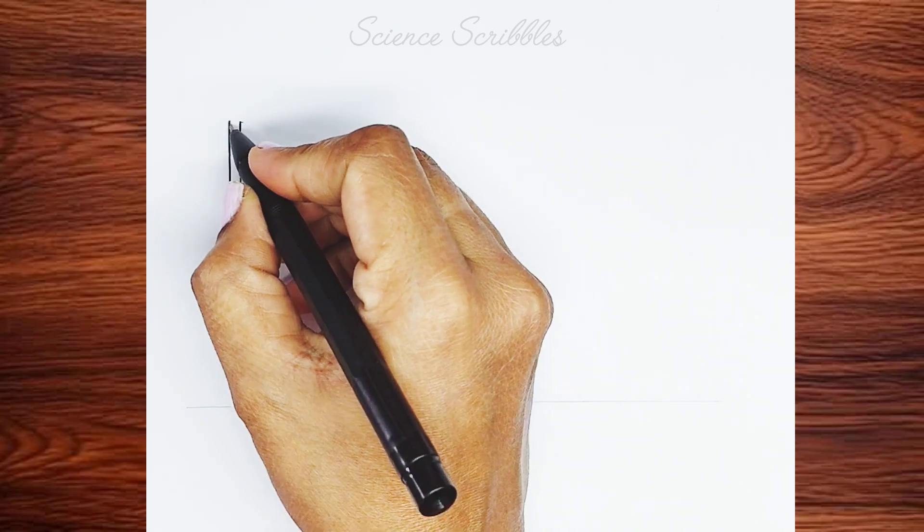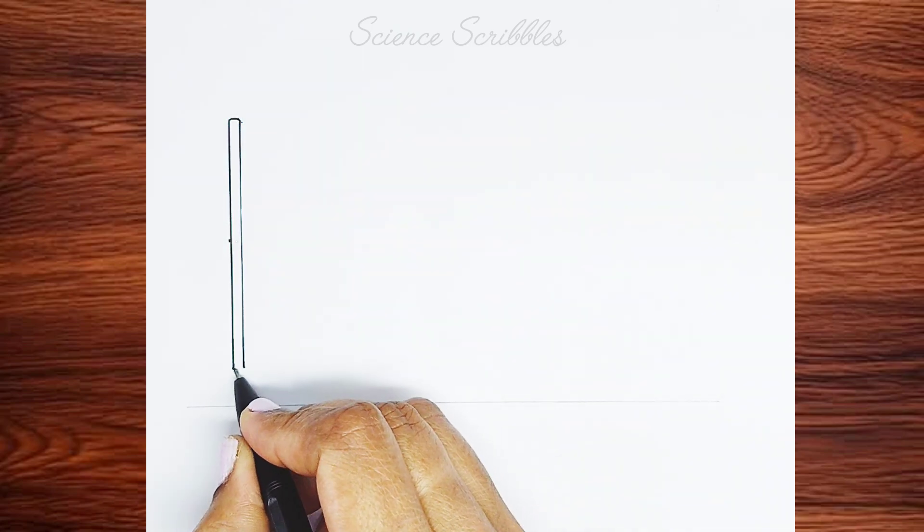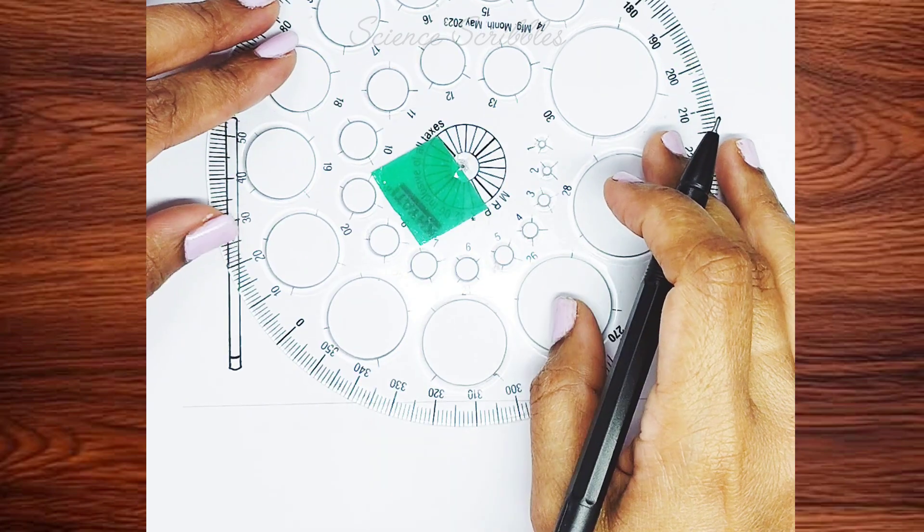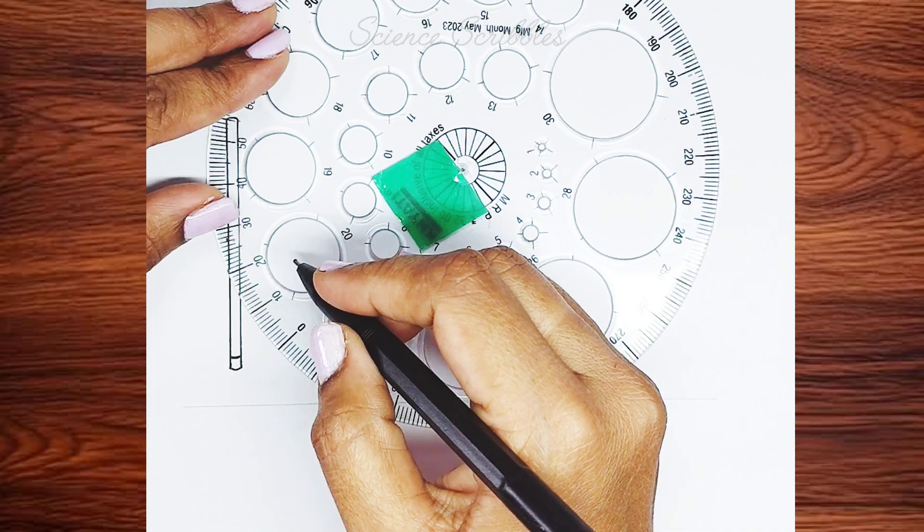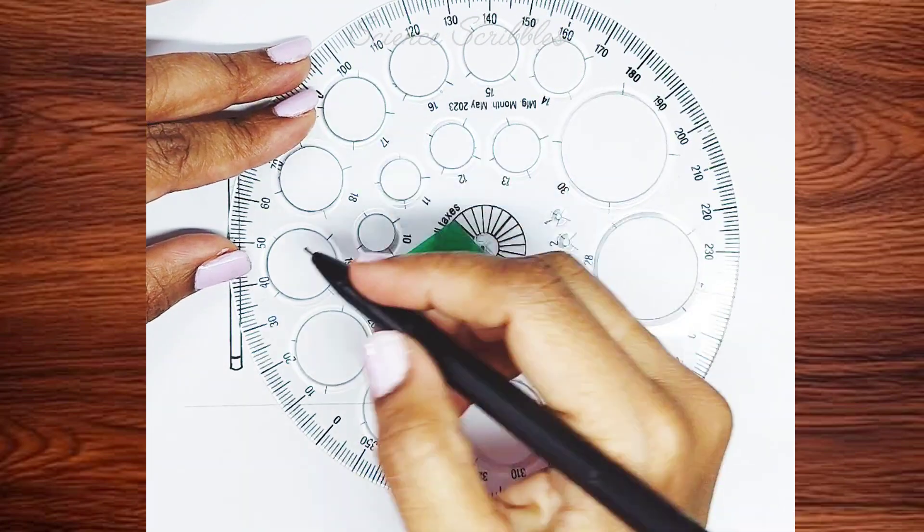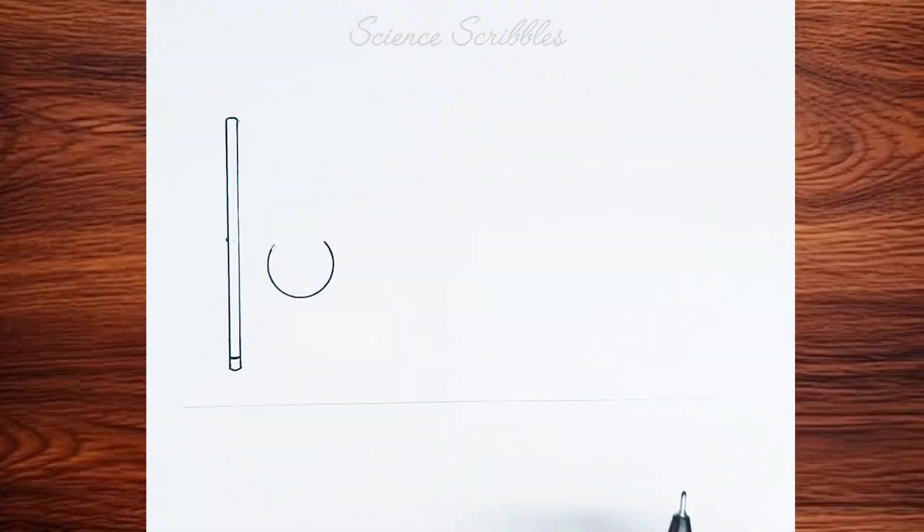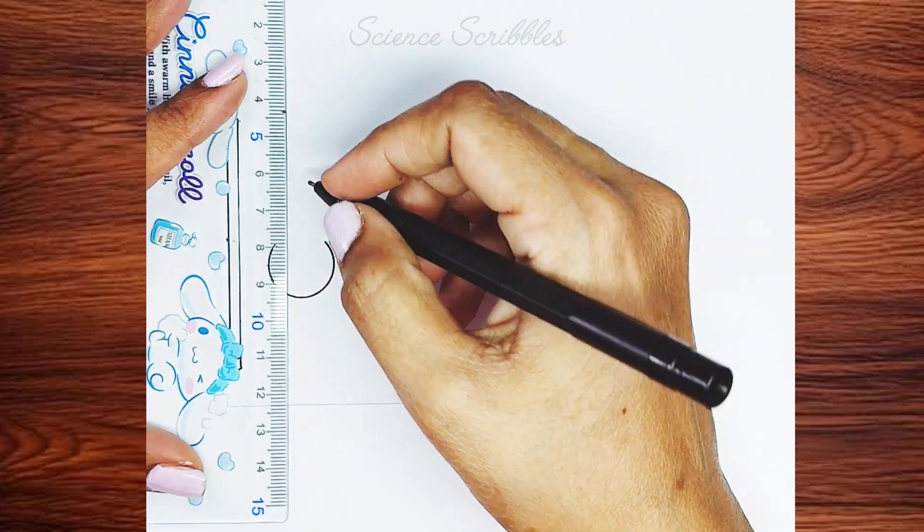First, draw two long parallel lines. I have used a 360-degree protractor to draw the circle for the distillation flask. Next, draw two lines connected to the circle.